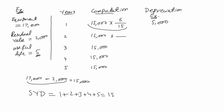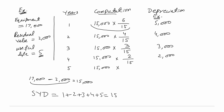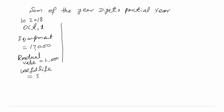In year 2, the denominator remains the same at 15, but the numerator changes. The remaining useful life is now 4 years. We multiply 15,000 by 4 over 15 to get depreciation expense of 4,000 in year 2. In year 3, we use 3 over 15, giving 3,000. In year 4, remaining useful life is 2 over 15, giving 2,000. Note that the depreciation amount calculated here is a full-year amount.